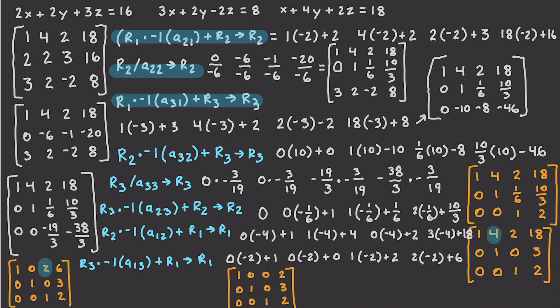What does that tell us? It specifically tells us that the value of x is going to be 2, the value of y is 3, and the value of z is equal to 2. And there you go — a whole bunch of math, a whole bunch of solving. We're all a lot smarter. Please leave your questions and comments down below. Till next time.